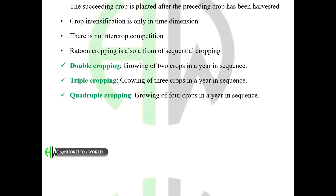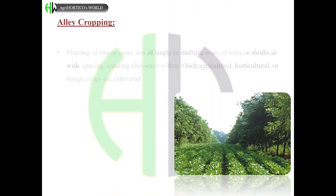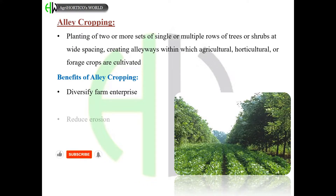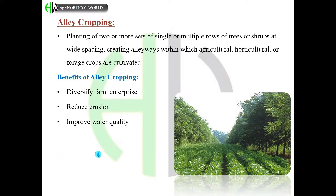Alley cropping is the planting of two or more sets of single or multiple rows of trees or shrubs at wide spacing, creating alleyways within which agricultural, horticultural, or forage crops are cultivated. Benefits of alley cropping include: it can diversify farm enterprise, helps to reduce erosion, improves water quality, protects crops, enhances wildlife, and improves aesthetics.